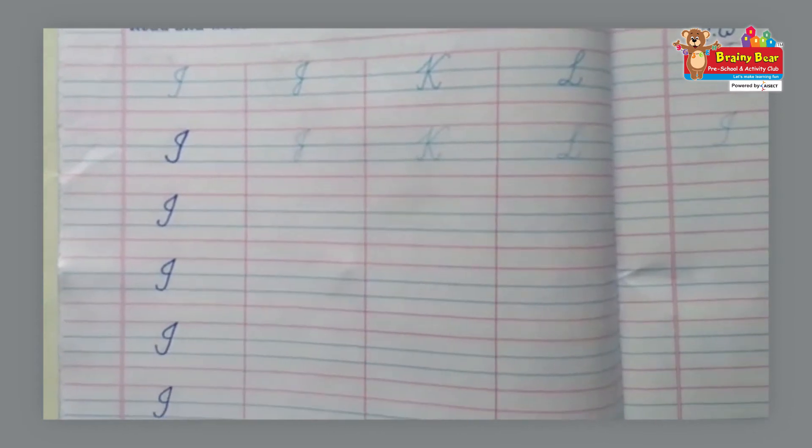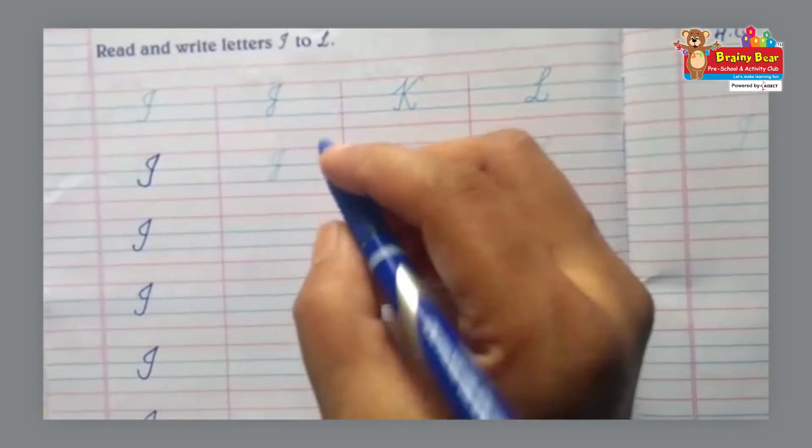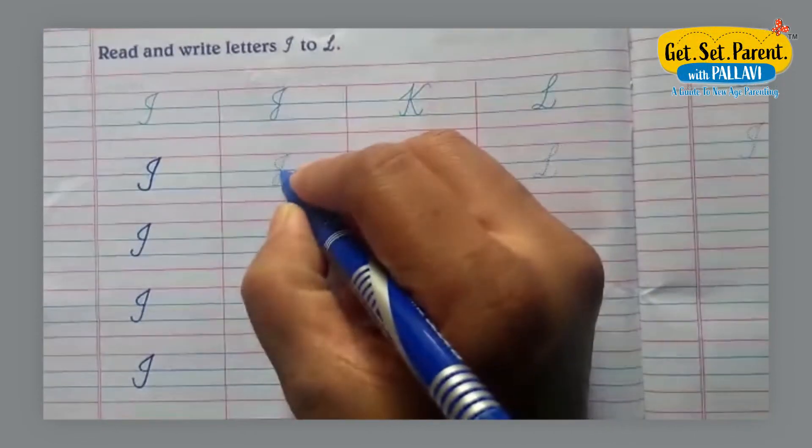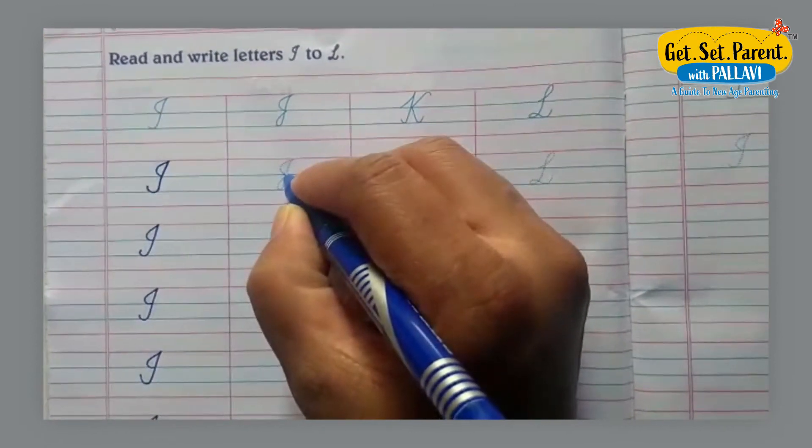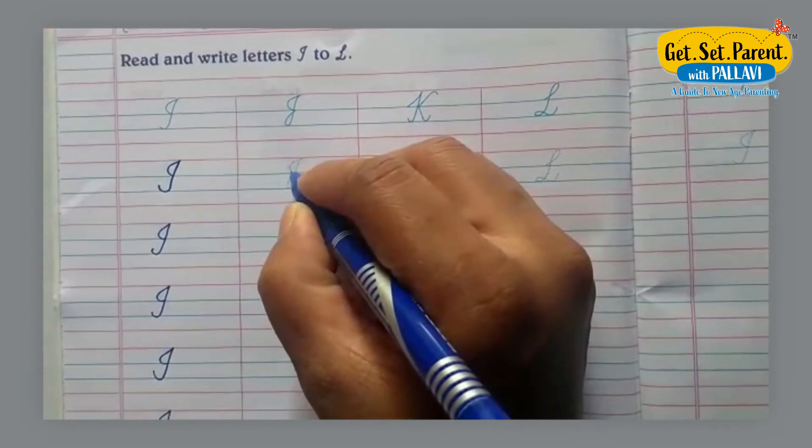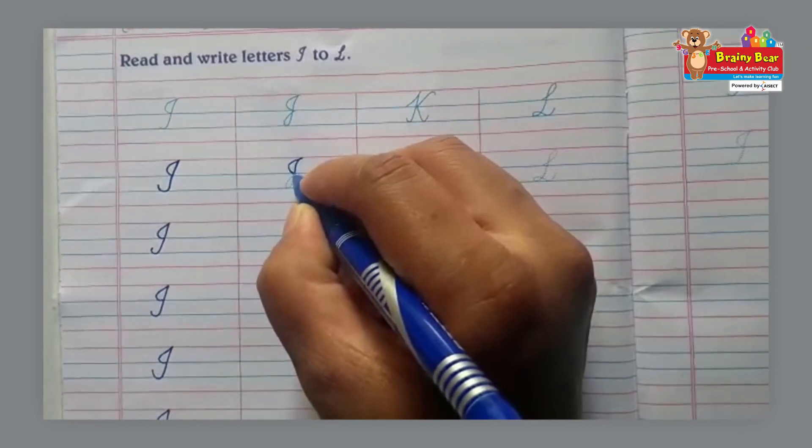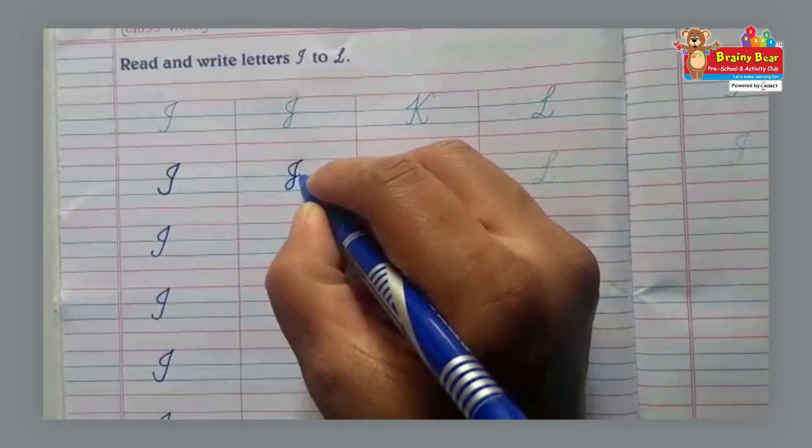First we have to do it on the given dots. We'll start from this like this. Go down and loop like this.